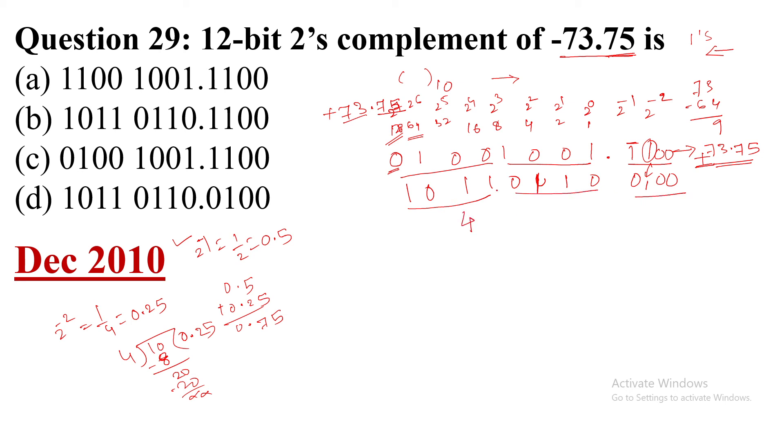So the first four bits are 1011. Check it. Option a has 1100, that is eliminated. Option b has 1011, yes, correct in the first four bits. Next four bits 0110, yes. And then point 0100. But it is given as 1100, no. So option b is wrong.